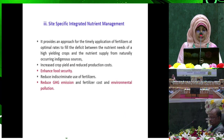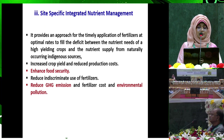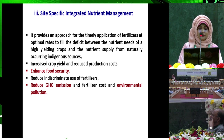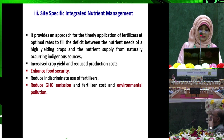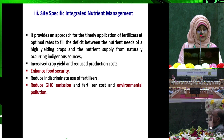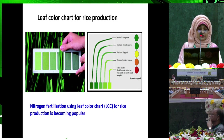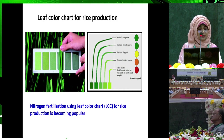Integrated nutrient management provides an approach for the timely application of fertilizer at optimal rates to fill the deficit between the nutrient needs of high-yielding crops and the nutrient supply from naturally occurring indigenous sources. It enhances food security and reduces GHG emission and fertilizer costs and environmental pollution. The leaf color chart for rice production is becoming very popular for rice nitrogen fertilization.